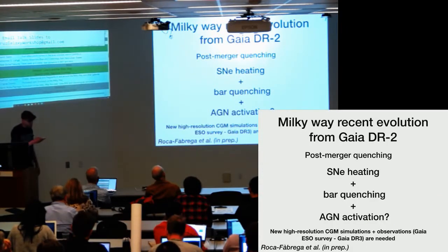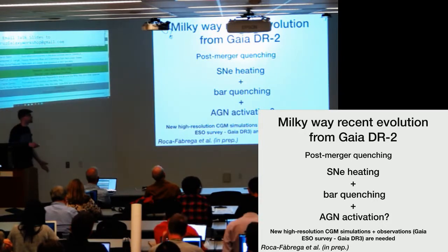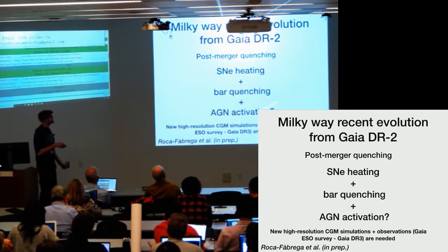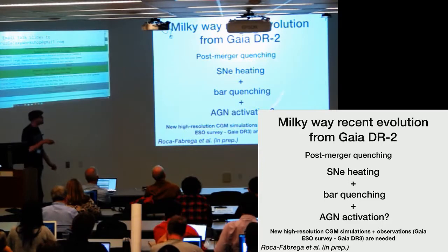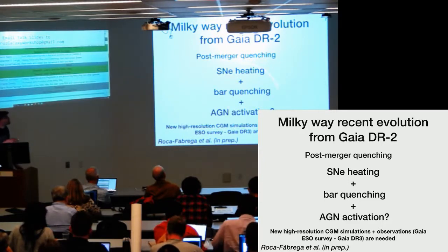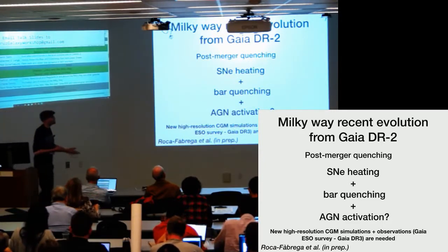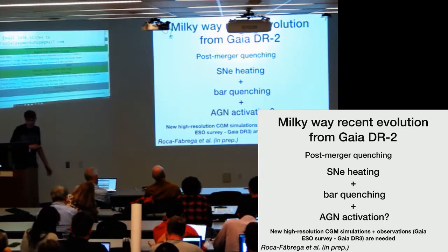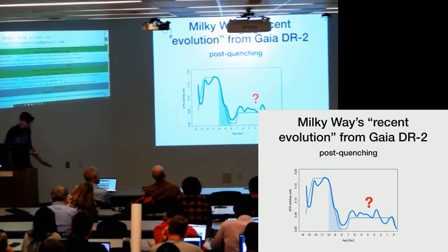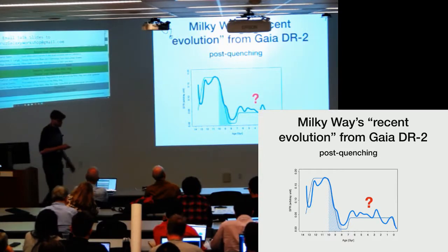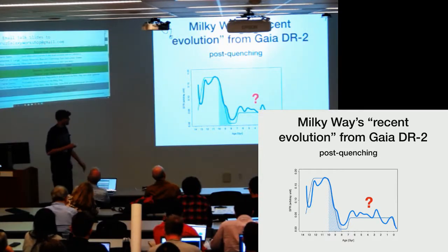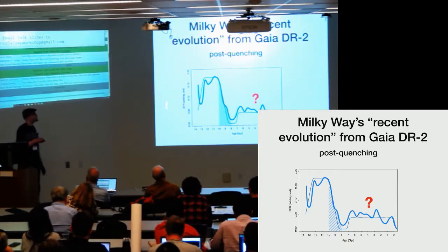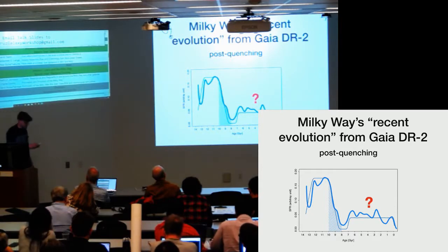We are now doing research with cosmological simulations with high resolution in the CGM to try to see which one of these mechanisms, or which combination, can produce a similar quenching as the one observed. The important results we obtained in collaboration with people in Barcelona are about what happens next, after this quenching event.